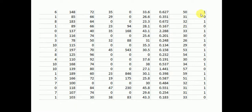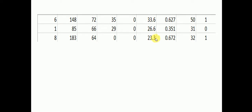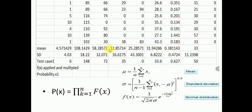We separate zeros and ones, then calculate mean and standard deviation and apply them to the test case. The test case is 101. We sum all values in the first column, then similarly the second, third, fourth, fifth, sixth, seventh, and eighth columns to calculate the mean. The formula uses mu to represent the mean of the given input data, here for class zero.